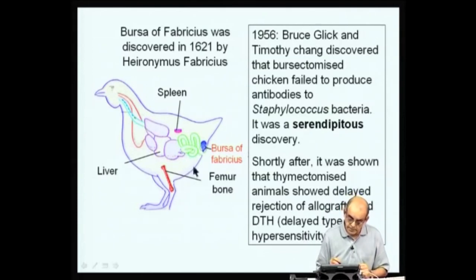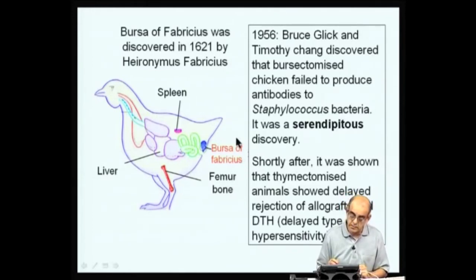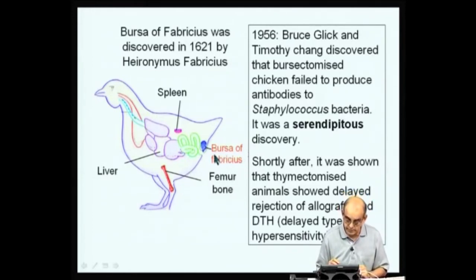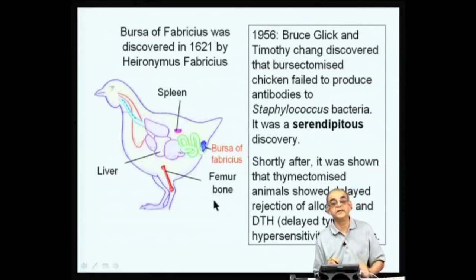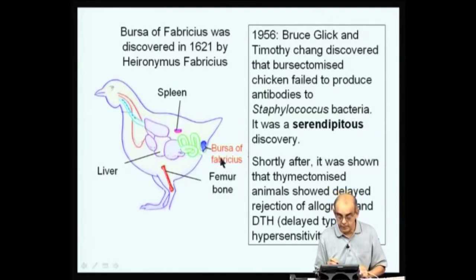This was the discovery of the function of the bursa of Fabricius. Therefore, all these cells were named after the bursa, which starts with B, and therefore it was called a B cell. Now you know how the B cell derives its name.